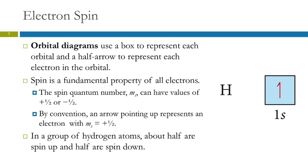We can describe where the electrons are using electron configurations or using orbital diagrams. Orbital diagrams, being a diagram, are more visual. Here's the orbital diagram for hydrogen: the box represents a single orbital, and we write what it is underneath — this is the 1s orbital. We show electrons as half arrows. The orbital diagram indicates the spin of the electron: it can be plus one-half, which we represent as an arrow pointing up, or minus one-half, which we represent as an arrow pointing down.